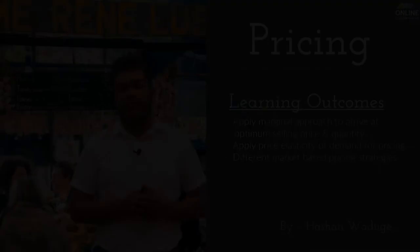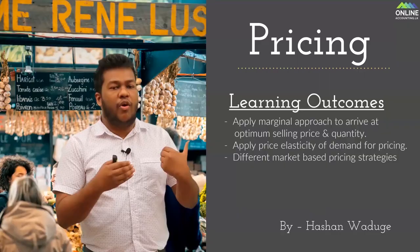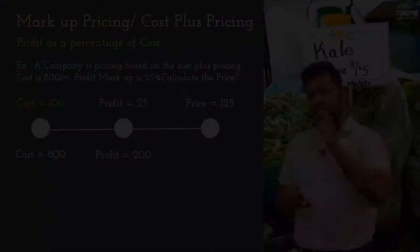In this pricing lesson, we are going to learn the learning outcome of pricing. For a price of 100, what about for 800? For 800, you will also apply 25 percent — so 800 into 25 percent.